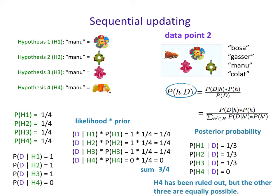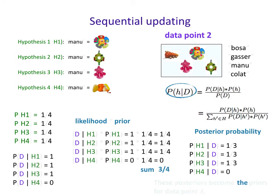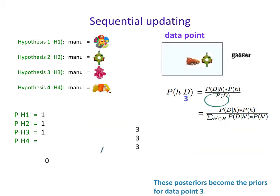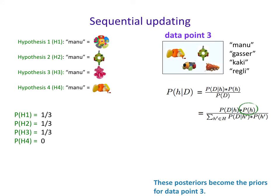Here's our posterior after data point two: hypothesis four has been ruled out, but the other three remain equally possible at one-third each. Because we're doing sequential updating, these posteriors become the priors for our last data point. We move them over — hypothesis four is out of the running with a prior of zero, but our other three are still in the running.